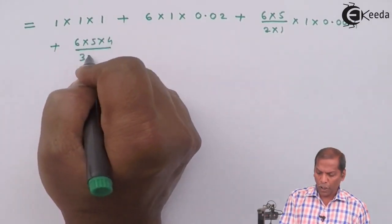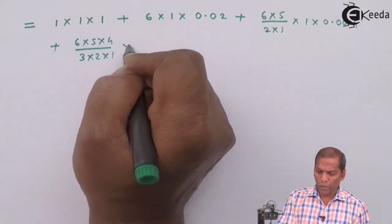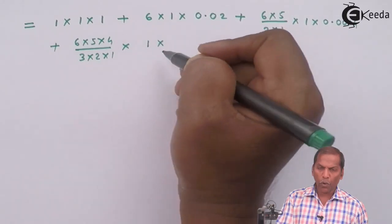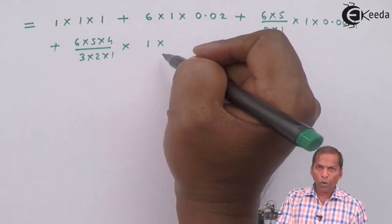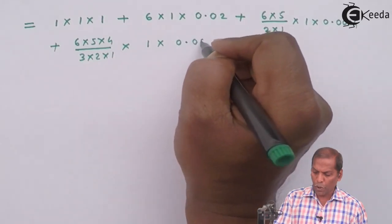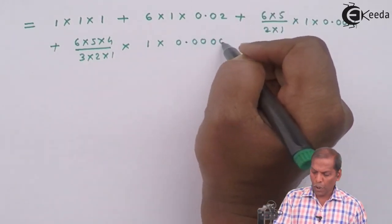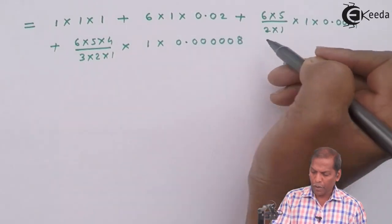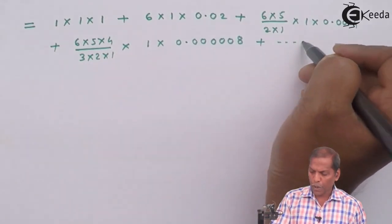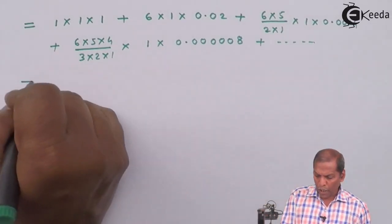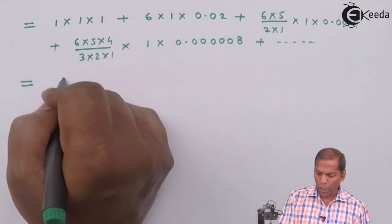(6C3) that gives us 6 into 5 into 4 upon 3 into 2 into 1 into (1)^3 gives 1 into (0.02)^3 so that gives 0.000008 and plus going on.